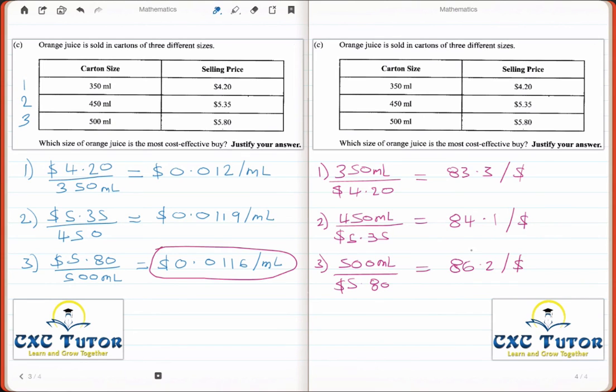Remember, in this method we are looking for the most amount of juice you can buy with $1. So our answer again is the third juice.